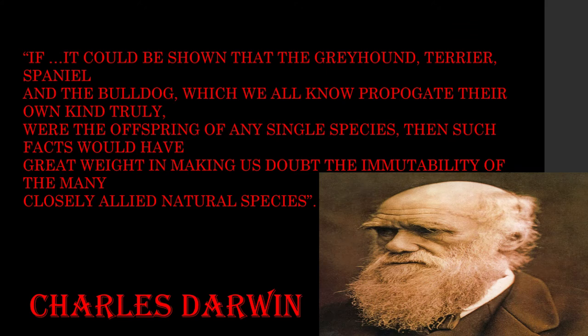Darwin stated: "If it could be shown that the greyhound, terrier, spaniel, and the bulldog, which we all know propagate their own kind truly, were the offspring of any single species, then such facts would have great weight in making us doubt the immutability of the many closely allied natural species."